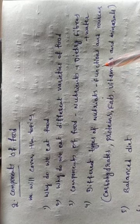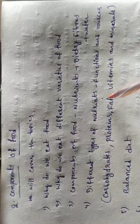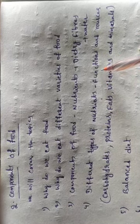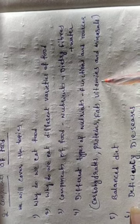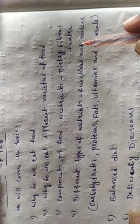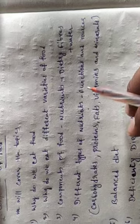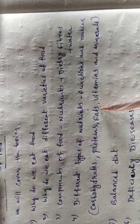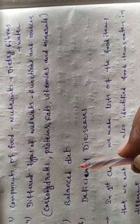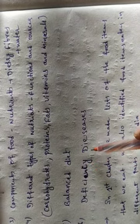The fourth topic is different types of nutrients — their functions and sources: carbohydrates, proteins, fats, vitamins, and minerals. The fifth topic is balanced diet, and the sixth topic is deficiency diseases.